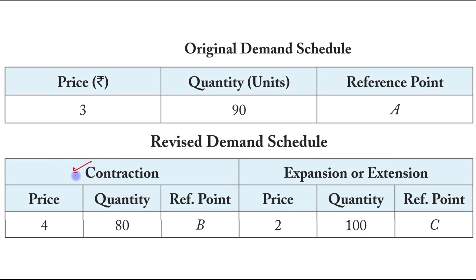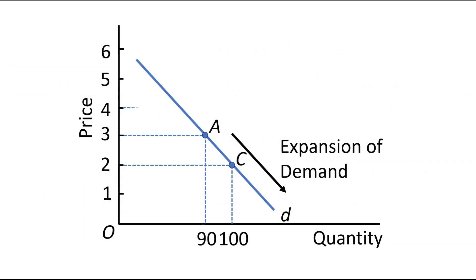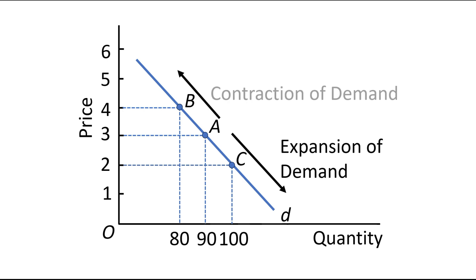Now let's focus on the contraction part. Contraction means that when price increases, quantity demanded decreases. So when price increases from Rs. 3 to Rs. 4, quantity demanded falls from 90 units to 80 units. At a price of Rs. 4, quantity demanded is 80 units and the reference point is B. The movement from point A to point B represents an upward movement, which is known as contraction of demand.